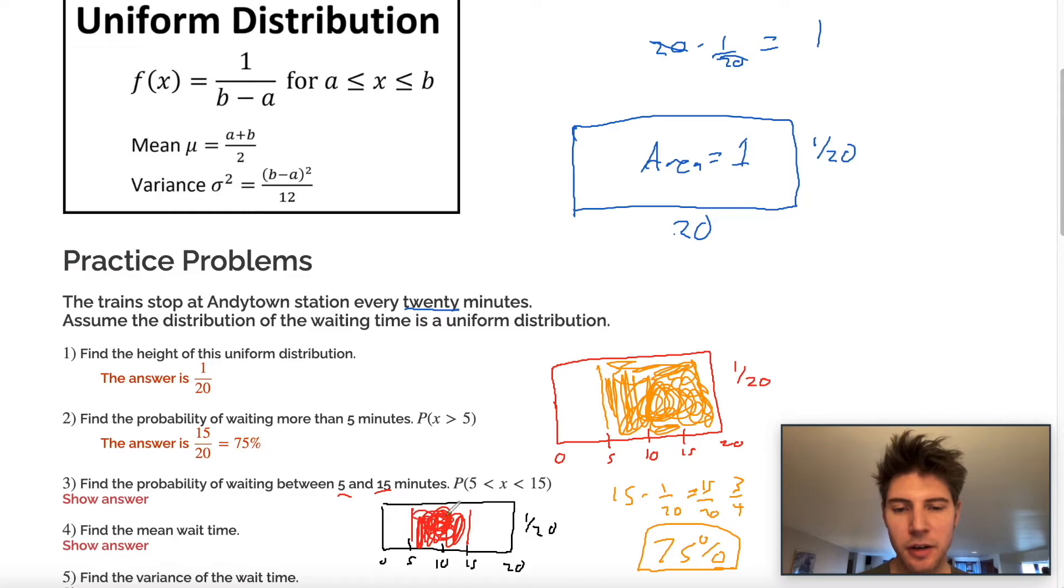So what is the base here? Well, the base of this rectangle is 10 because it's between five and 15. And the height is still the one over 20. So 10 times one over 20 is 10 over 20 or 50%.